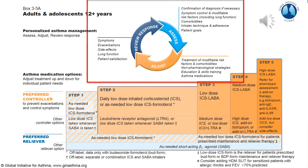We should assess and confirm if they have a diagnosis, talk about symptom control, and assess modifiable risk factors. We should look into comorbidities, and at every single visit assess the patient's inhaler technique and adherence to their medicines, and also evaluate the patient's goals for therapy. Finally, we should consider adjusting therapy if needed, treat modifiable risk factors if possible, and evaluate what we can do for comorbidities. There are non-pharmacological strategies we could educate patients on, as well as educate them overall about asthma and training of how to use their different medications.